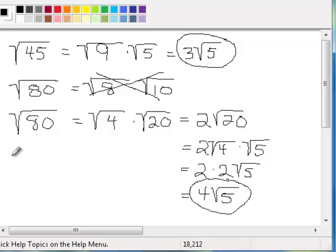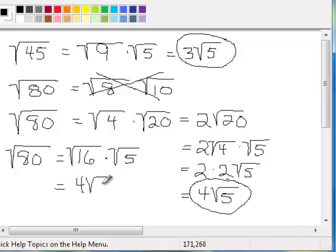Let me show you another way to approach this problem that's a little quicker. If you look at 80, you might be able to see that there's a square root of 16 times the square root of 5, because 16 times 5 is 80, and 16 is a perfect square. The square root of 16 is 4, so we get 4√5, and we're done.